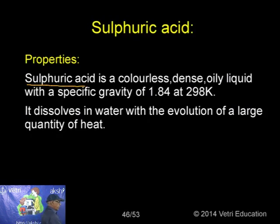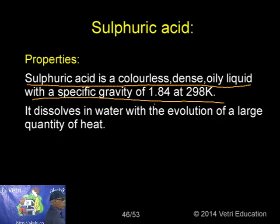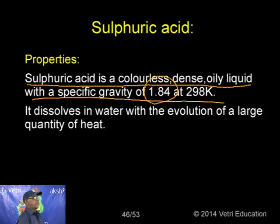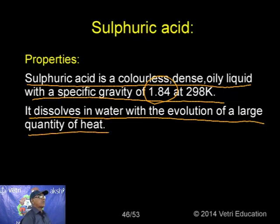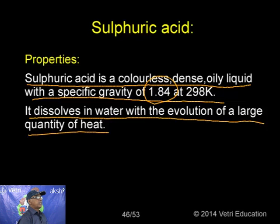Sulphuric acid is manufactured by the contact process which involves three steps. Step one: burning of sulphur or sulphide ore in air to generate sulphur dioxide. Step two: conversion of SO₂ to SO₃ by reaction with oxygen in the presence of vanadium pentoxide catalyst — 2SO₂ + O₂ → 2SO₃.